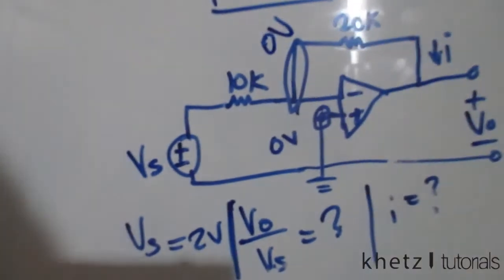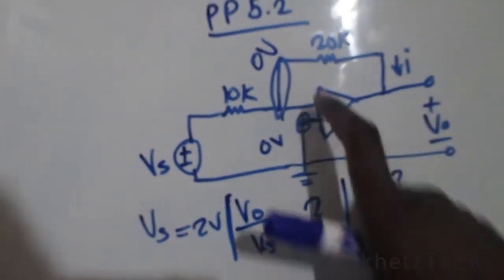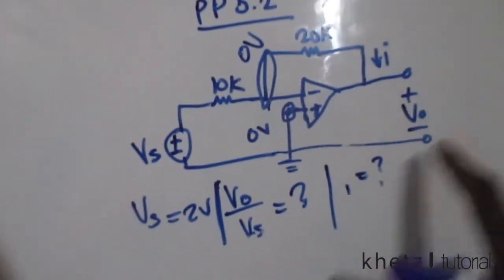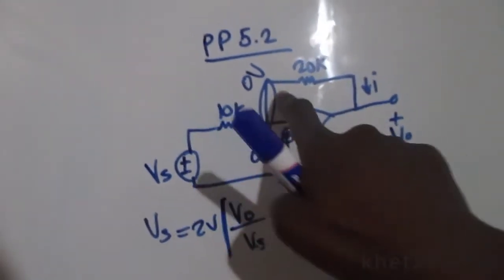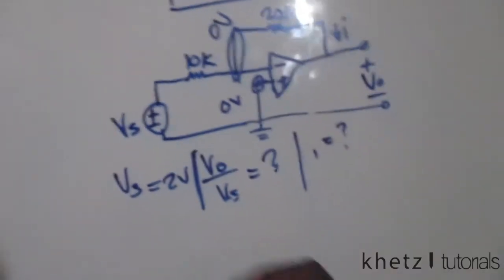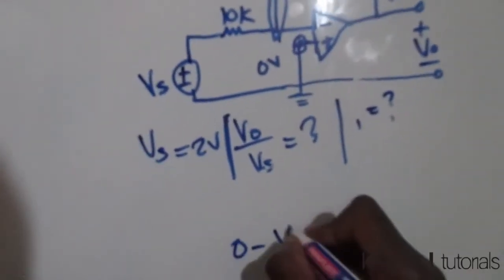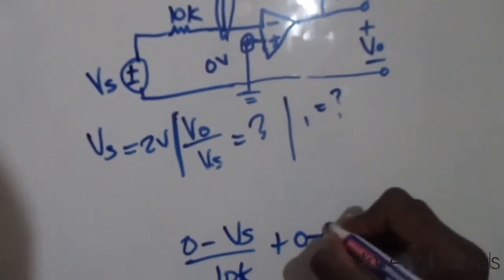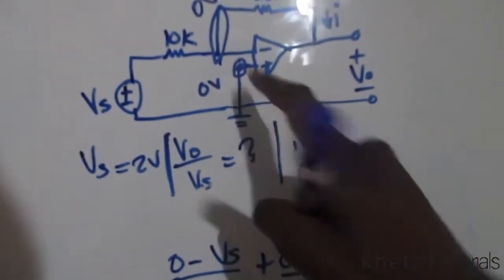So let's do that quickly. We're gonna do nodal analysis at this node. You're gonna have zero subtract Vs divided by 10k plus zero subtract Vo divided by 20k. Once again, there isn't any current associated with the terminal.